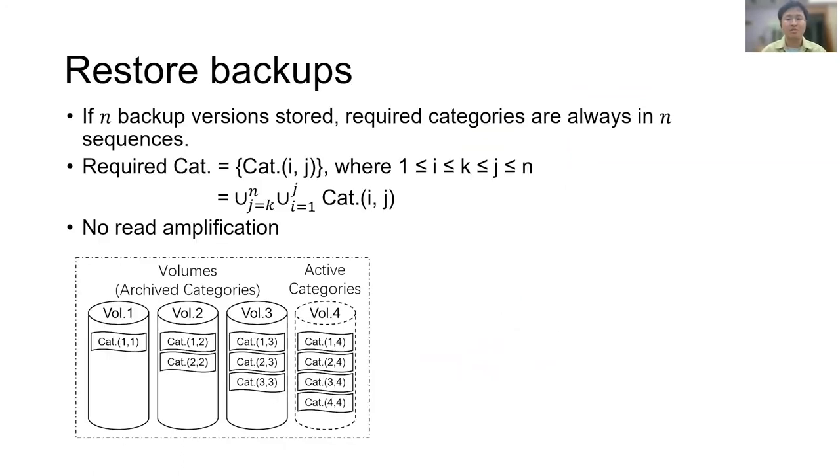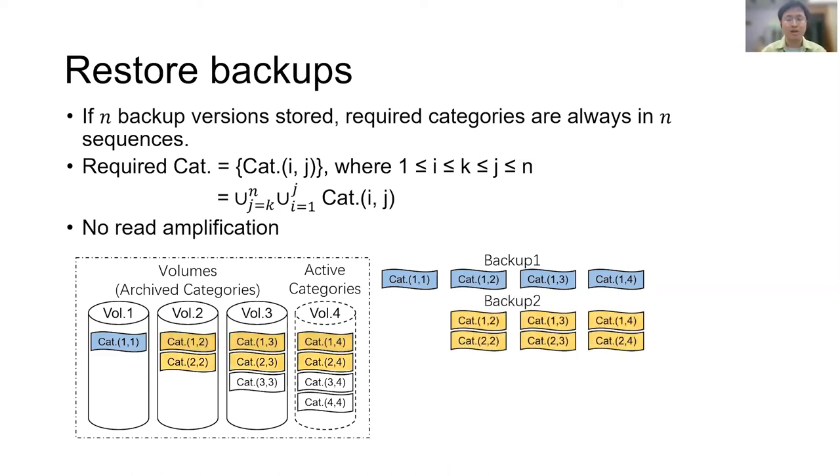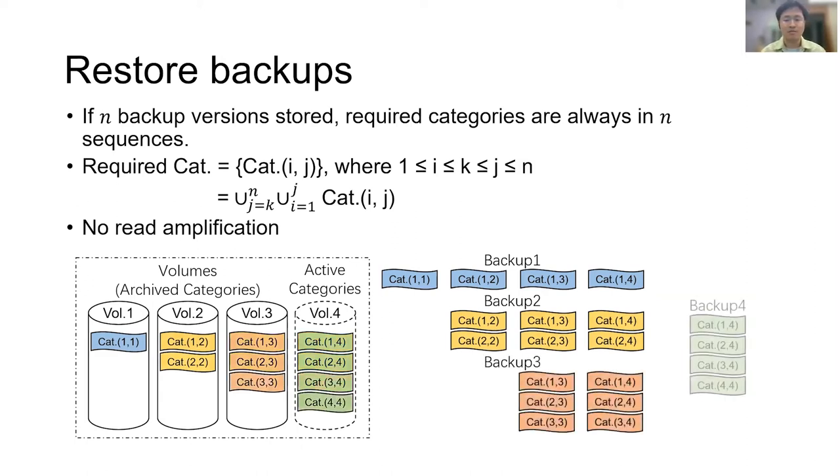Our data layout benefits restoring backups. It is because required chunks are always in several sequences. For example, the figure shows the data layout after storing 4 backups. If we want to restore backup 1, we need blue categories and required chunks are in 4 sequences. If we want to restore backup 2, we need yellow categories and required chunks are in 3 sequences, and so on. Read amplification is zero, and the number of random seeks is always equal to or less than the number of stored backups. In evaluation, we can find this feature helps for achieving a much higher restore performance.